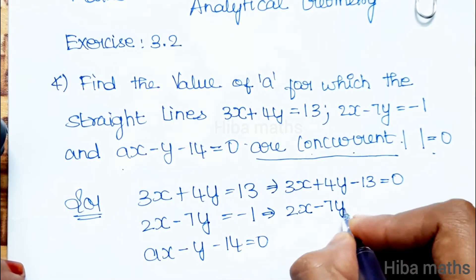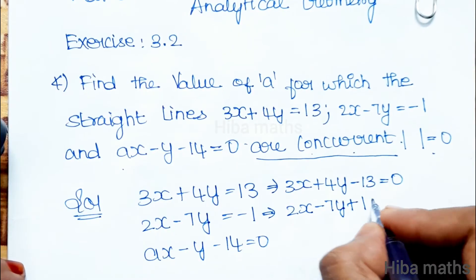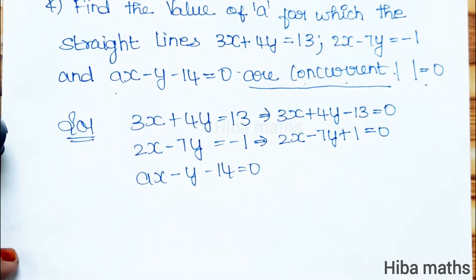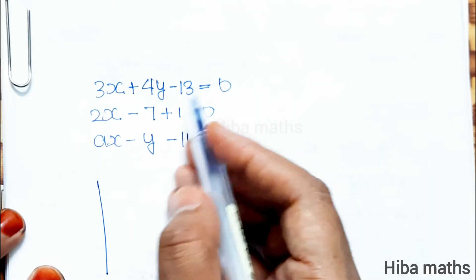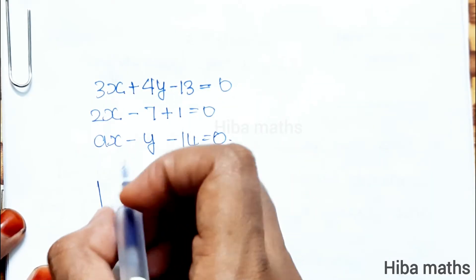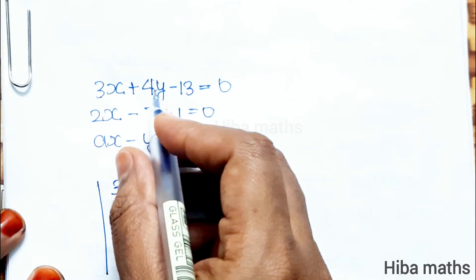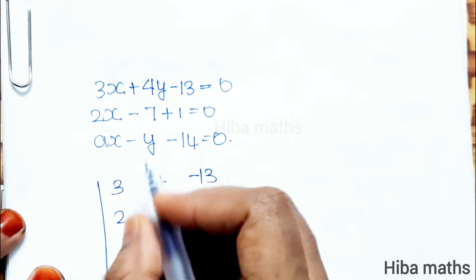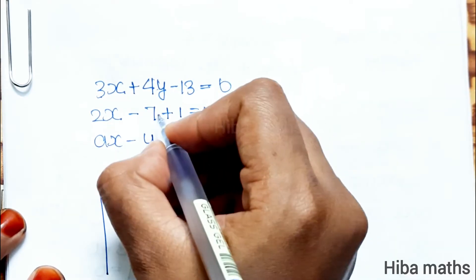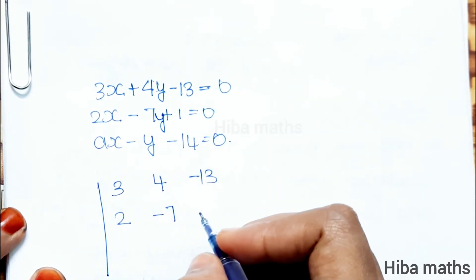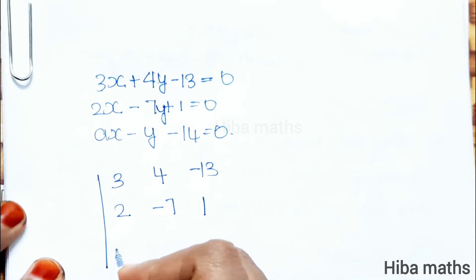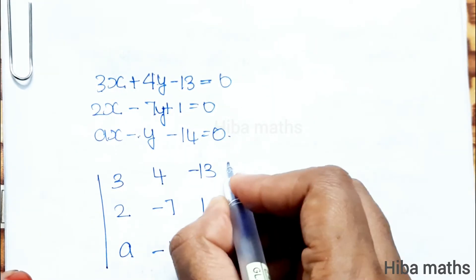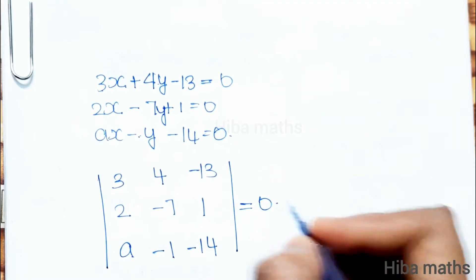We set up the matrix format. The matrix is: row 1: 3, 4, minus 13; row 2: 2, minus 7, minus 1; row 3: a, minus 1, minus 14. This determinant is equal to 0. We will now expand.